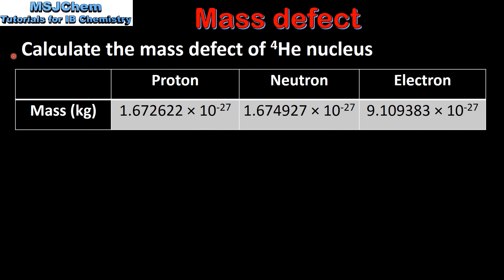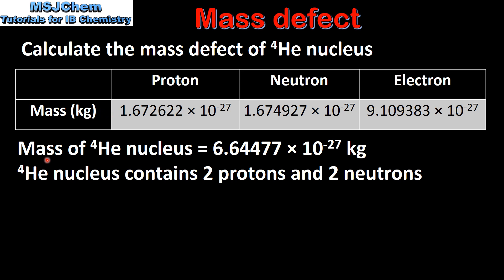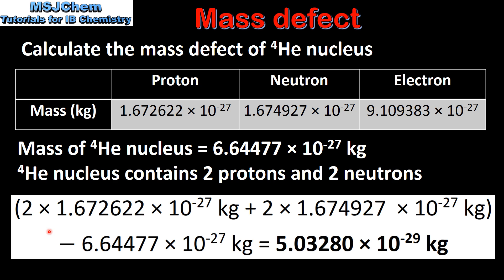Next we will calculate the mass defect of a helium nucleus. Here we have the masses in kilograms of a proton, neutron and electron. The mass of a helium nucleus is 6.64477 × 10⁻²⁷ kg. A helium nucleus contains two protons and two neutrons. To calculate the mass defect, we multiply the mass of a proton by two and add that to two times the mass of a neutron. We then subtract the mass of the helium nucleus to give us our mass defect.